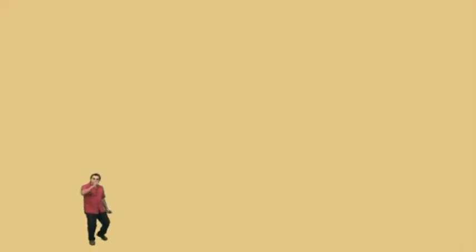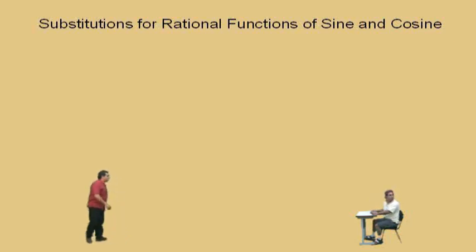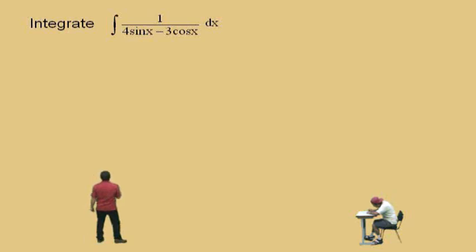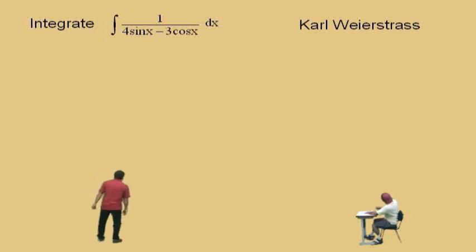Hey, this is Professor Perez from Saddleback College. Today we're going to look at substitutions for rational functions of sine and cosine. We cannot have a class without our student of the semester, Charlie. Get a piece of paper and a pencil and let's get ready to go. We're going to integrate 1 over (4 sin x − 3 cos x) dx using an ingenious substitution method developed by Carl Weierstrass. We'll go through the procedure and then apply it to this problem.